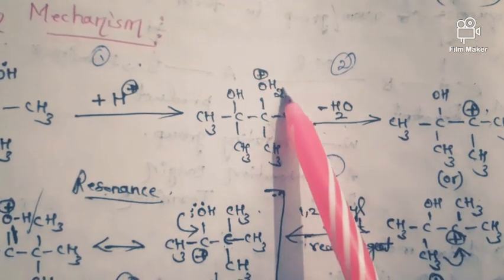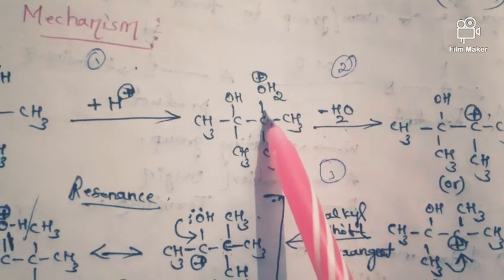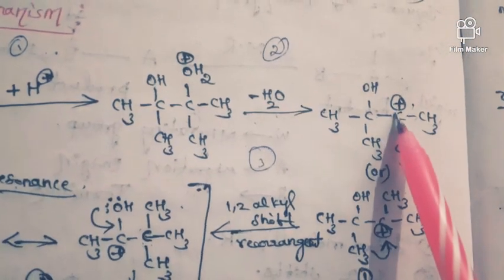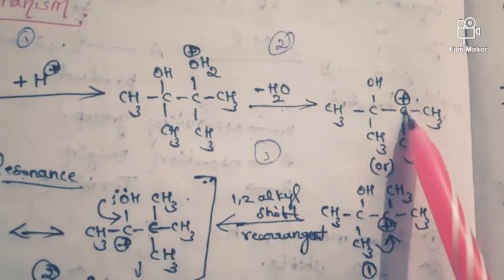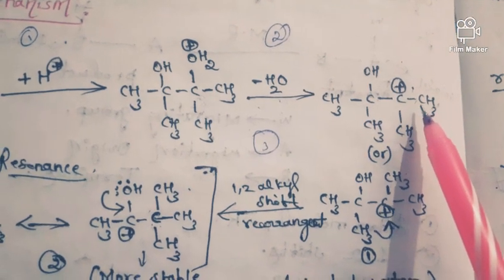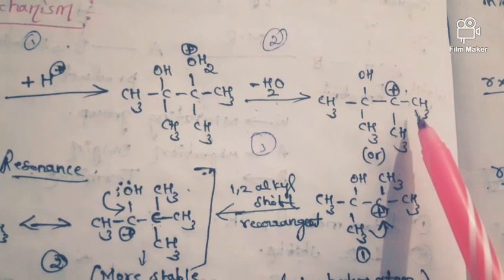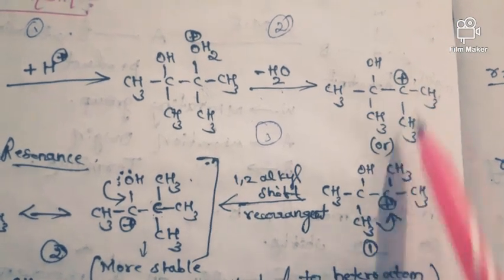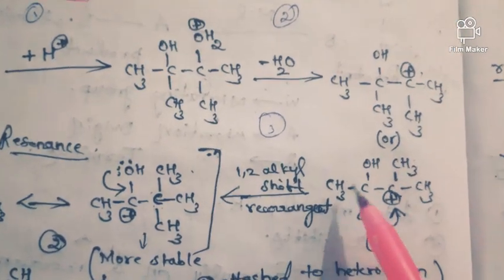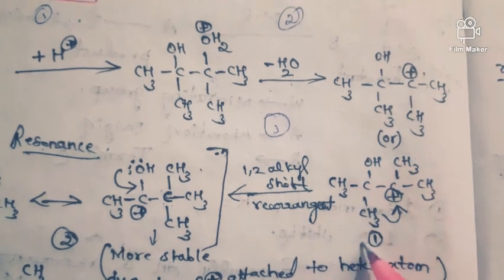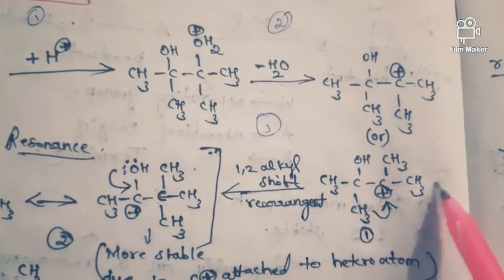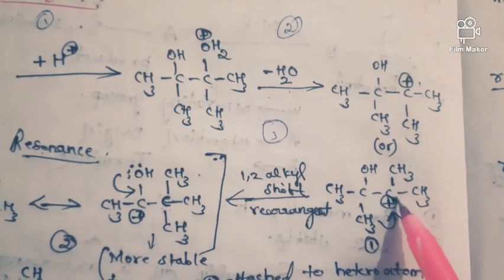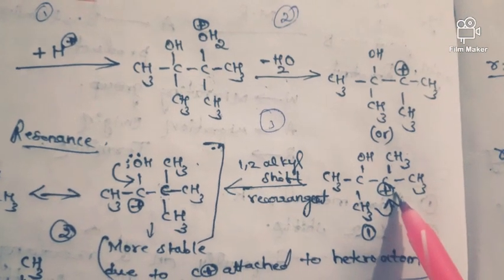The OH2 group is getting lost, so here we get the positive charge. For easy understanding of the alkyl shift, I have written the positive charge on the bottom side — these two representations are the same. The structure is CH3, COH, CH3 on one carbon and CH3, CH3 on the adjacent carbon.